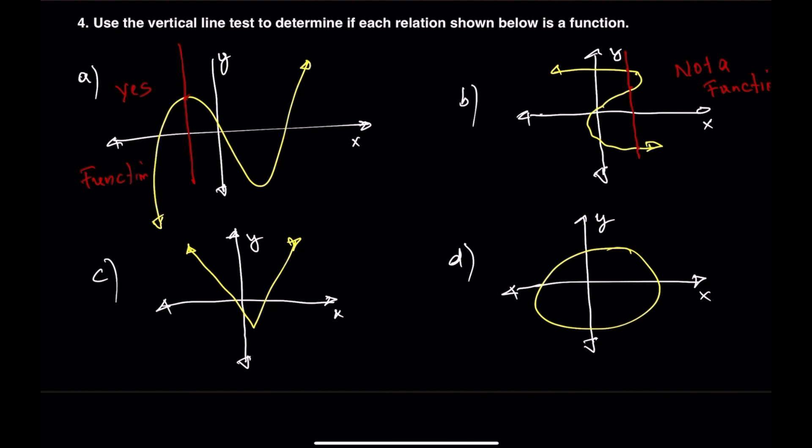Now onto the third graph, labeled C. If we draw a vertical line here, it only intersects the graph at one point, which means it is a function.